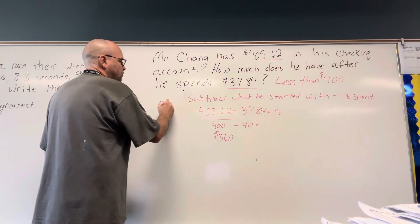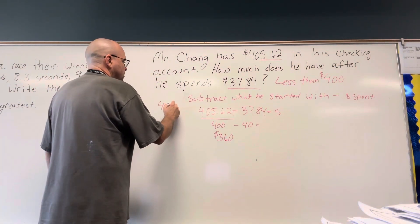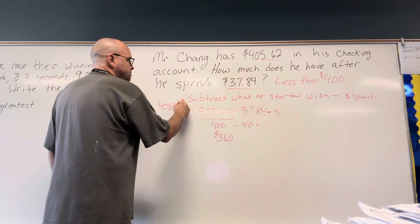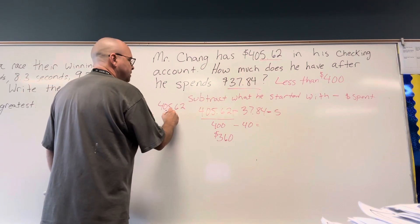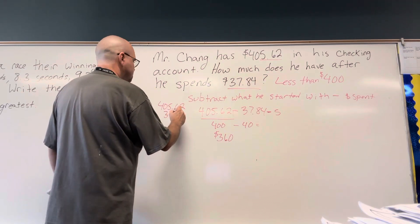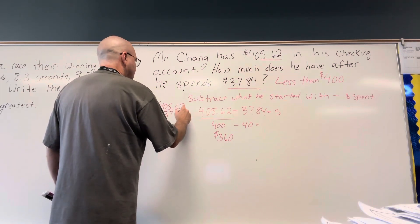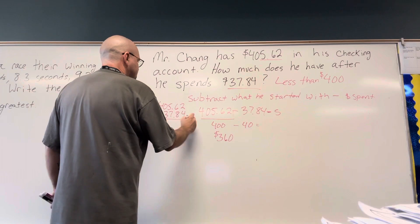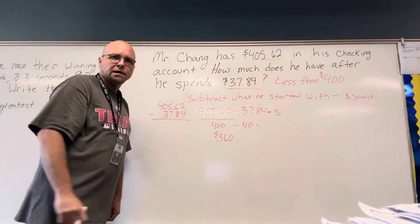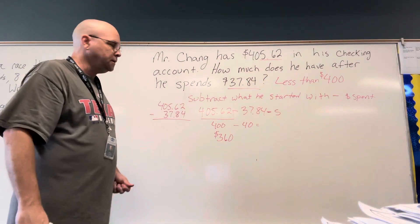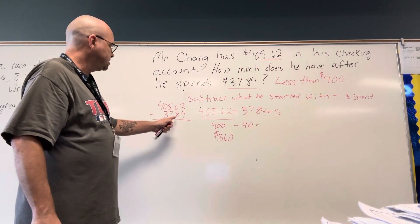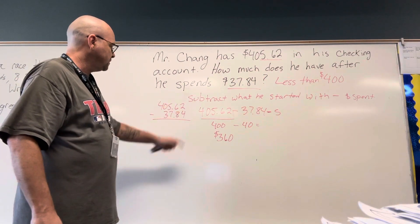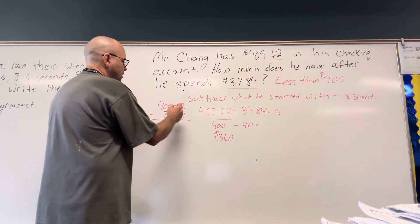So now going $405.62 subtract $37.84, making sure I line up my place values: ones over ones, tenths over tenths, hundredths over hundredths.